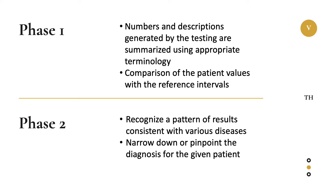Interpreting our CBC results can occur in two phases. In the first phase, numbers and descriptions generated by testing are summarized using appropriate terminology, and we compare the patient's values with reference intervals. In phase 2, we recognize patterns of results consistent with various diseases, which helps us narrow down or pinpoint the diagnosis for the given patient. In this presentation, we will be focusing more on phase 1.